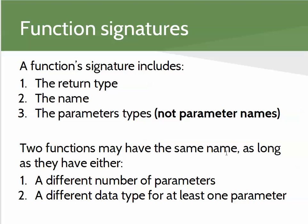Two functions may have the same name as long as they either have a different number of parameters — for example, a max function accepting two integers and another accepting three integers — or a different data type for at least one parameter. So two functions both named 'printMe', one accepting an integer and one accepting a double, is valid. When called, you'll pass either an integer or a double and the compiler can tell the difference.